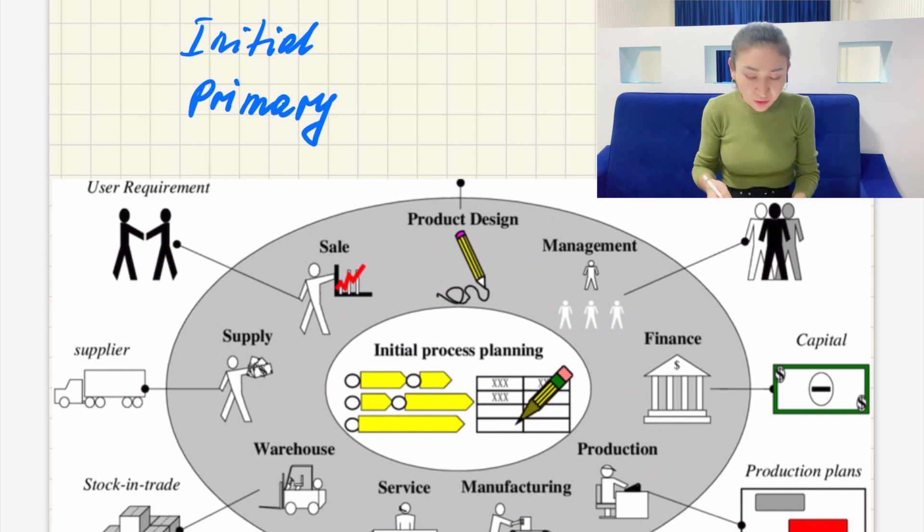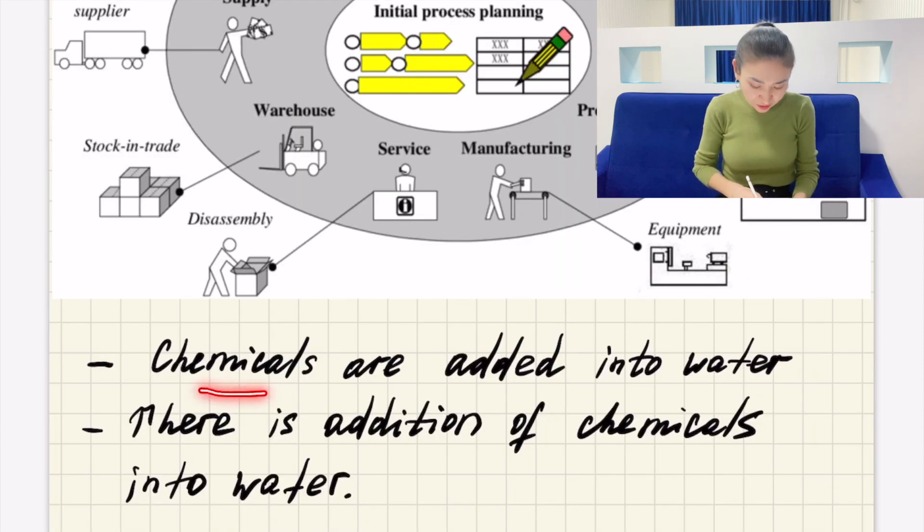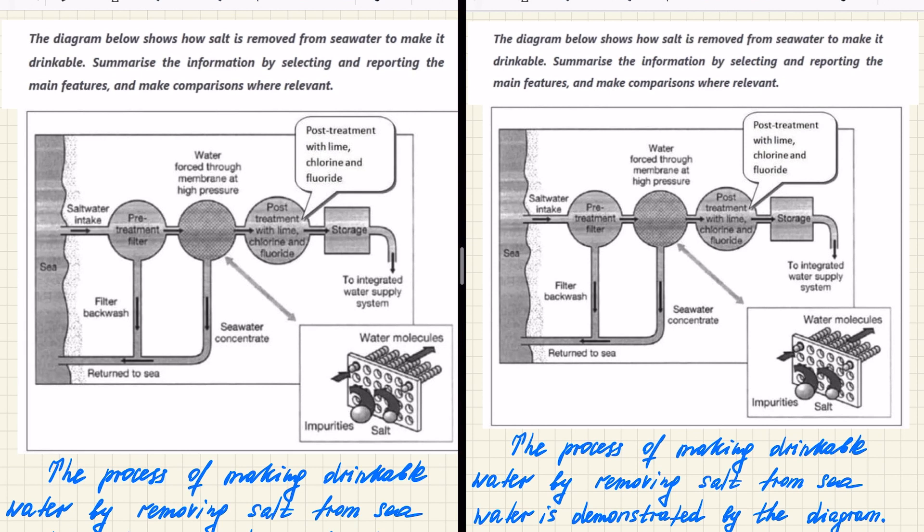So actually when we describe one of the first stages, we have to say initial or primary and we need to describe what is happening in your first stage for sure. So I just used here sentences just like chemicals are added into water. And if you need to add more words, one of the tricks is to say in a passive form. Let's say there is an idea, there is addition of chemicals into water. This is going to make you get visibility of putting more words into your task. First, I will go with an example.